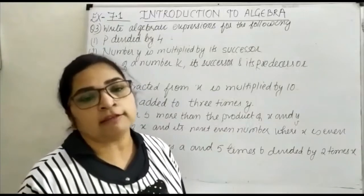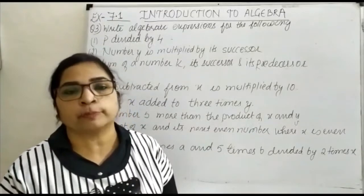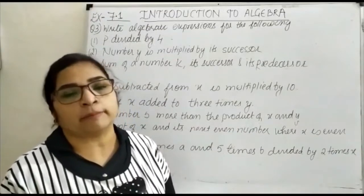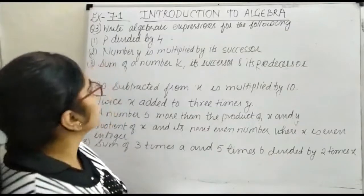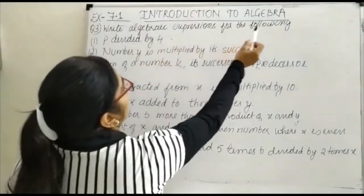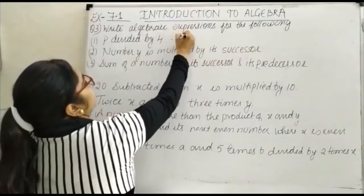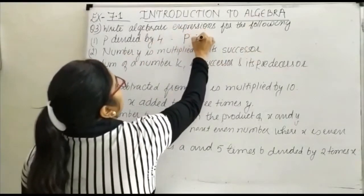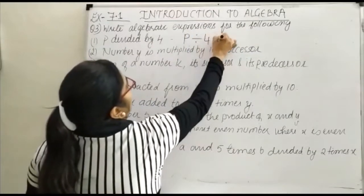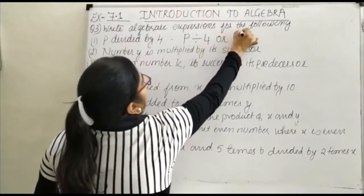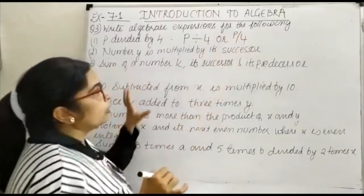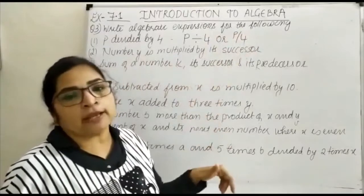Our question number 3 is to form the algebraic expression from the given statement. Write algebraic expression for the following. First is P divided by 4, which can be written as P/4 or P upon 4. Both are correct, you can choose any one.